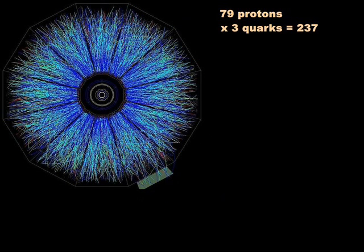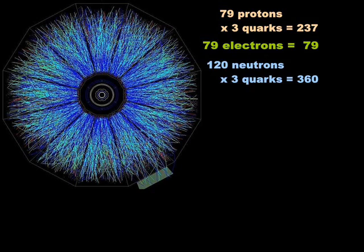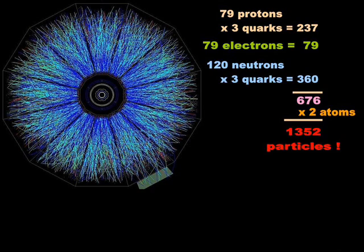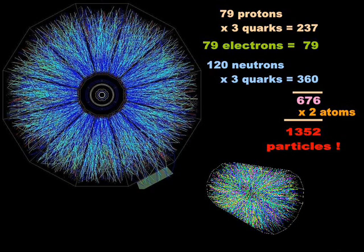A gold atom has 79 protons, 79 electrons and about 120 neutrons. If what you are staring at is the total number of particles that we can detect from such a collision, we should see no more than 1400 particles. In this cross section alone, without factoring the three dimensional radial components, we see thousands upon thousands of particles.